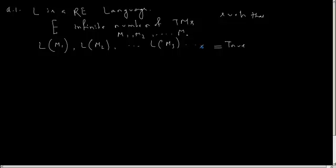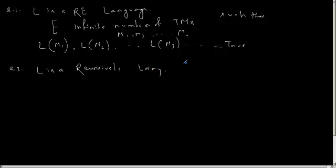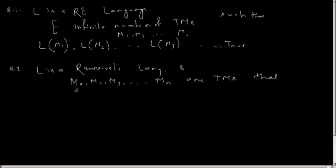Now question number two: suppose L is a recursive language, and M0, M1, M2, ... Mn are Turing machines that accept L.